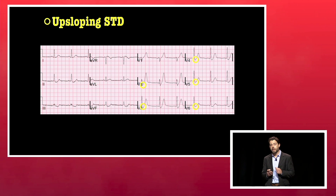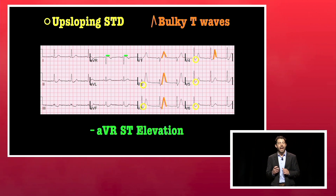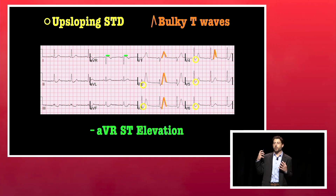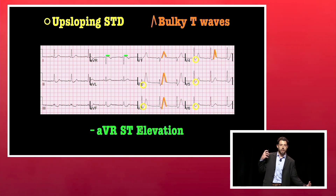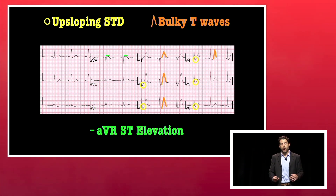Here's the upsloping ST-segment depression. Here's the big, bulky, symmetric T-wave, and then you will have AVR elevation, which is not surprising. All AVR does is it mirrors the rest of the heart. So if your entire precordium has ST-segment depressions, you're going to have AVR elevations that are reciprocal to those depressions. That's the expected finding.